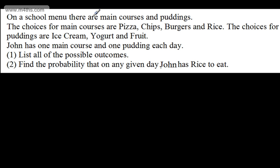On a school menu, there are main courses and puddings. The choices for main courses are pizza, chips, burgers, and rice. The choices for puddings are ice cream, yoghurt, and fruit. John has one main course and one pudding each day. In the first part, we're asked to list all of the possible outcomes. In the second part, we find the probability that on any given day John has rice. We'll assume these are all equally likely.